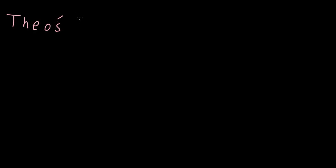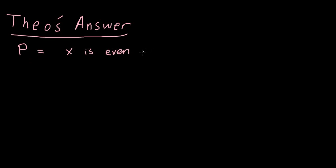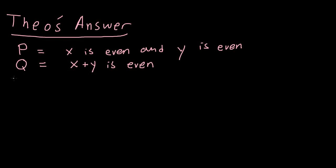The first answer is my friend Theo's. I asked Theo why does false imply true? Theo said: consider P as the statement 'X is even and Y is even,' where X and Y are two integers, and Q as the statement 'X plus Y is even.' So P implies Q is the statement: if X is even and Y is even, then X plus Y is even.